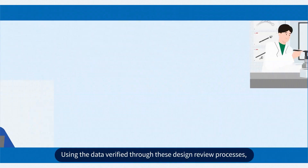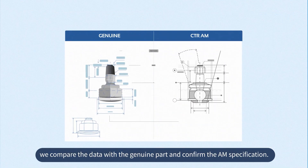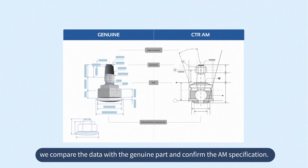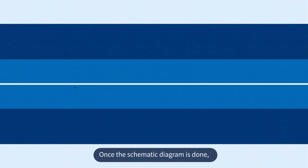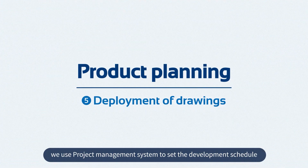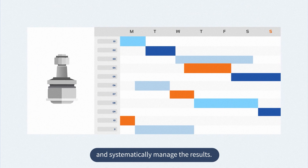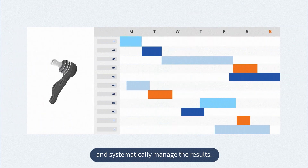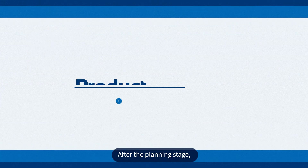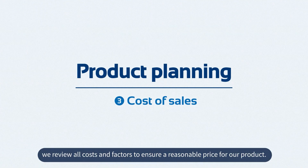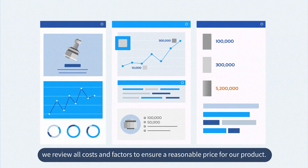Using the data verified through these design review processes, we compare the data with the genuine part and confirm the AM specification. Once the schematic diagram is done, we use a project management system to set the development schedule and systematically manage the results. After the planning stage, we review all costs and factors to ensure a reasonable price for our product.